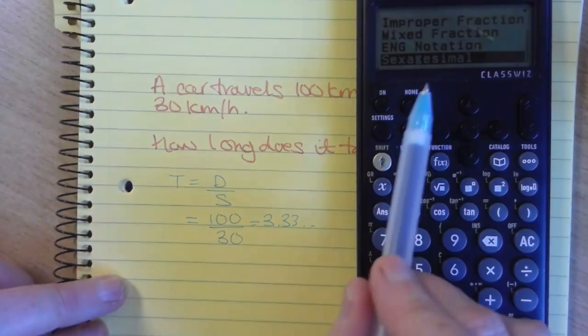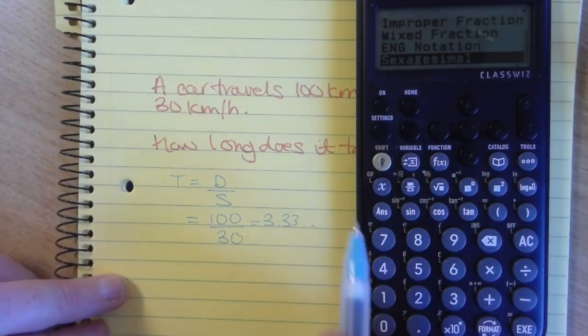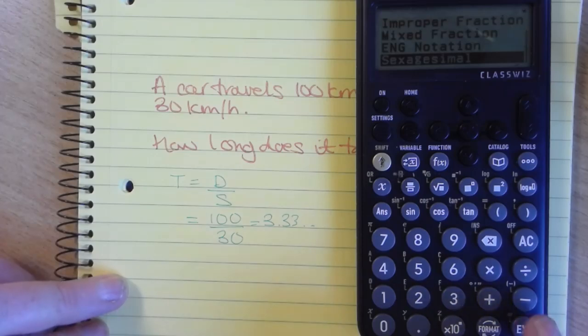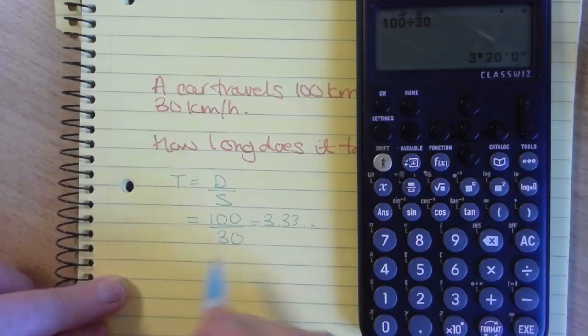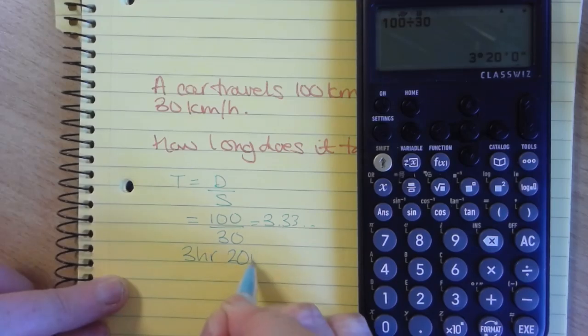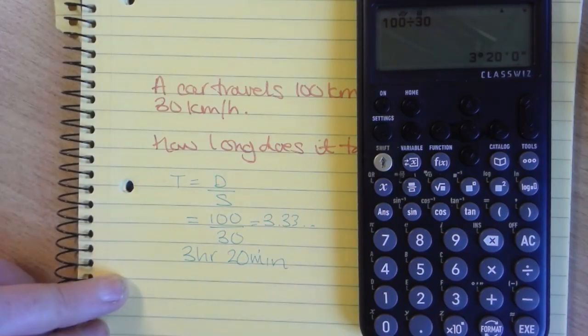Hilarious word. That actually just means base 60. That's what time is. So we press execute. And then we recognize the format. So that's 3 hours and 20 minutes.